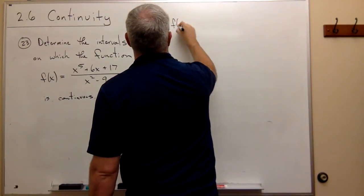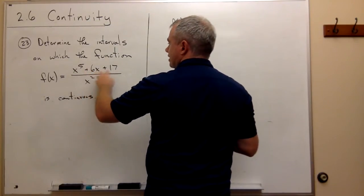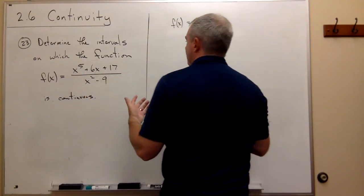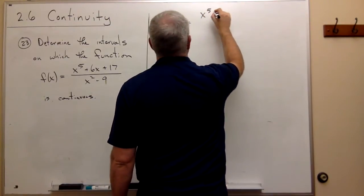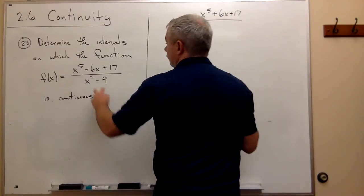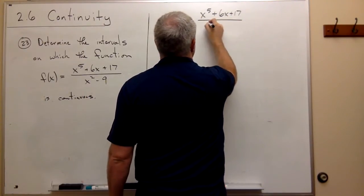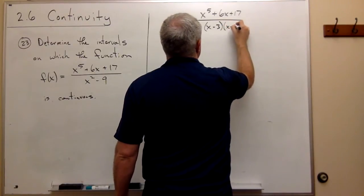So if I factor this function f of x, the top, x to the fifth plus 6x plus 17, that doesn't factor nicely. So we're just going to write x to the fifth plus 6x plus 17. And on the bottom, we can factor this. It's the difference of squares. So we get an x minus 3 times an x plus 3.